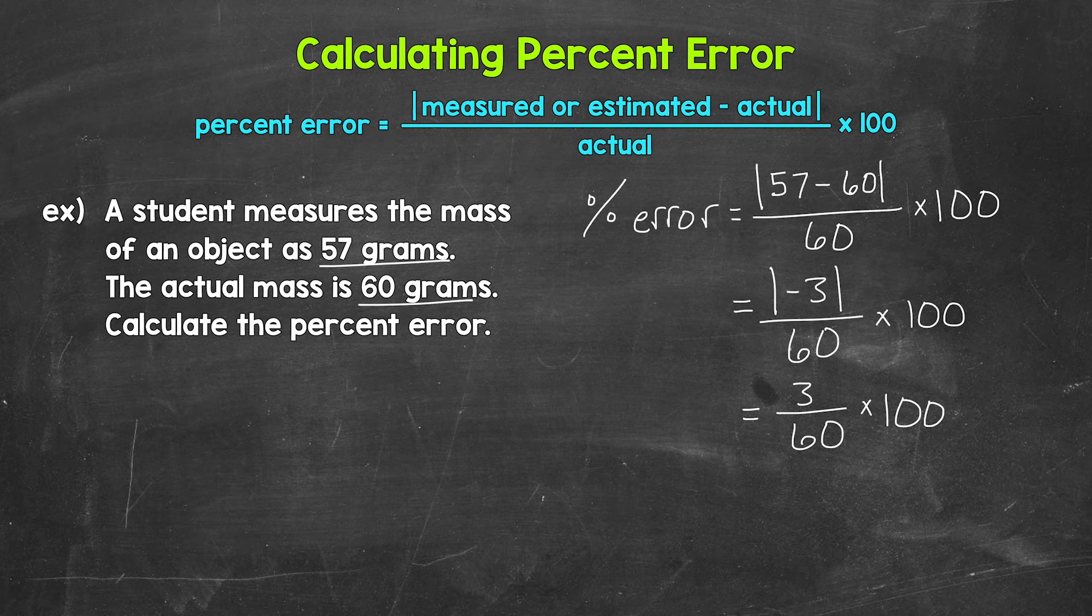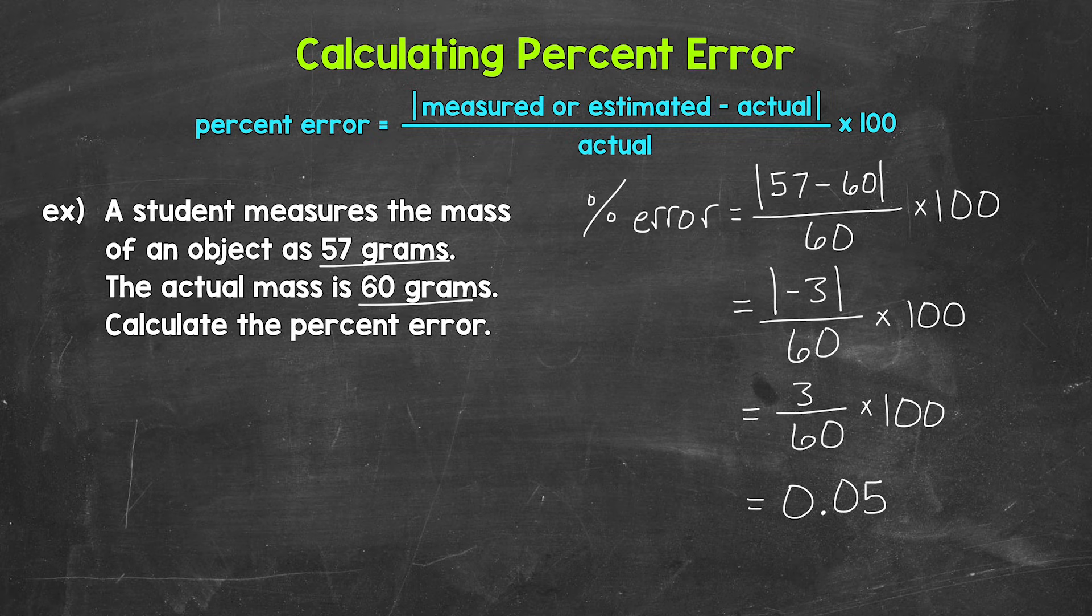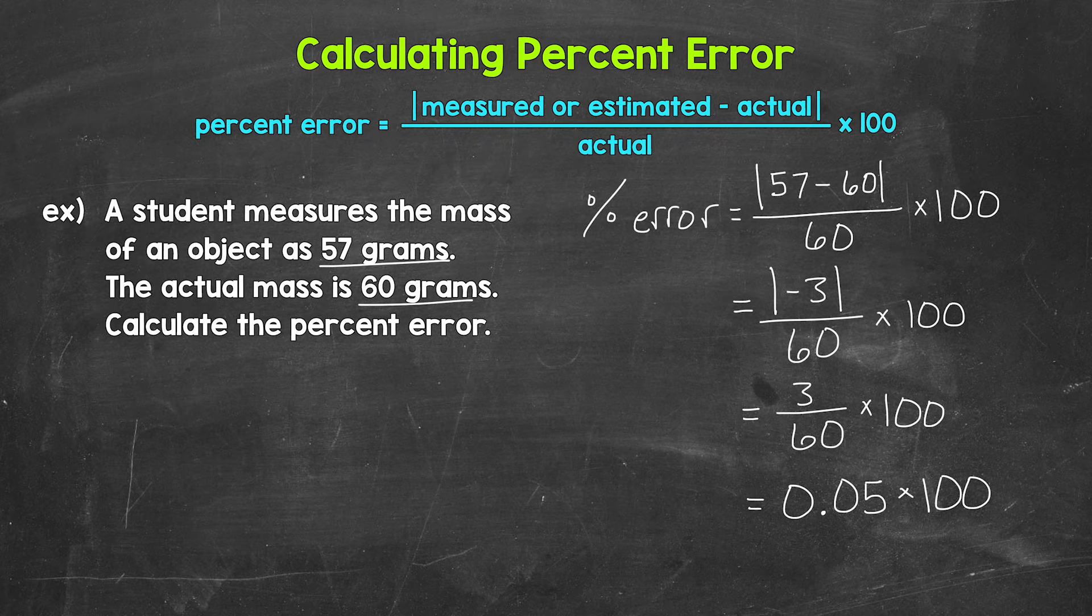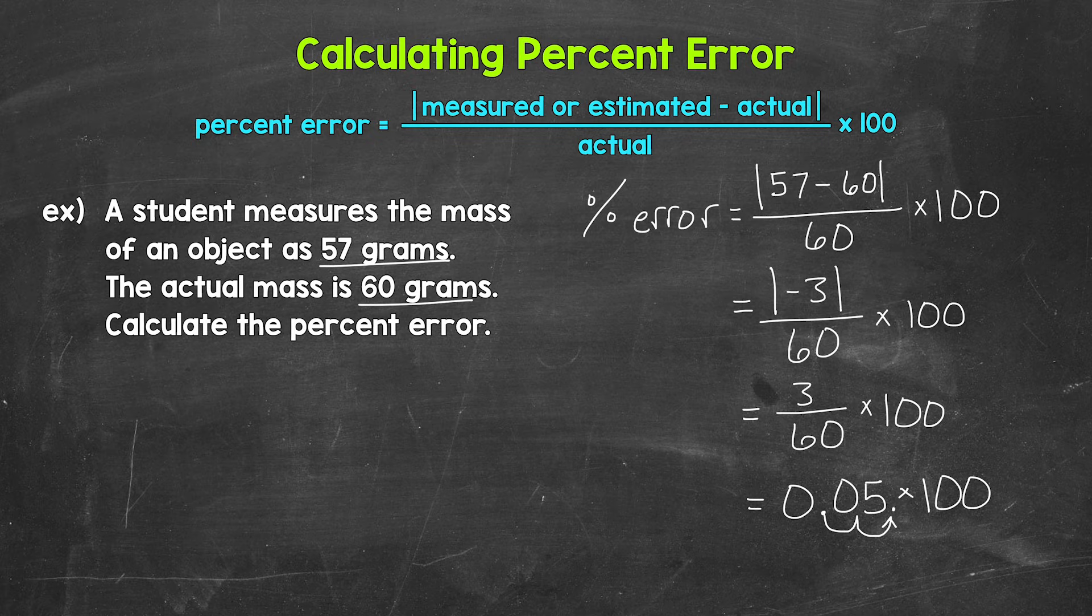And now we divide. We do three divided by 60, that gives us 0.05, five hundredths. And we need to multiply that decimal by 100 in order to convert it to a percent. And remember, a quick way to multiply by 100 is to move the decimal twice to the right. So once, twice. That gives us 5%.